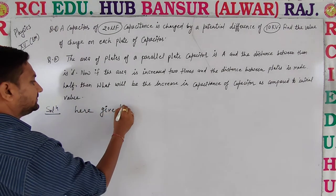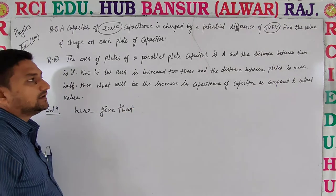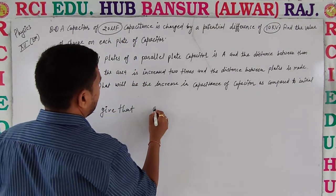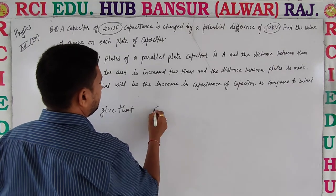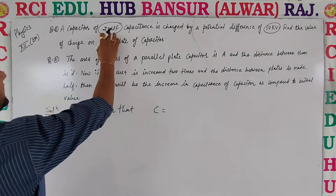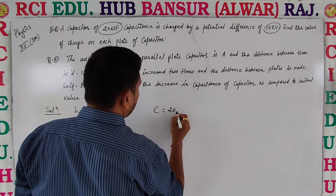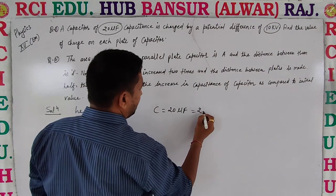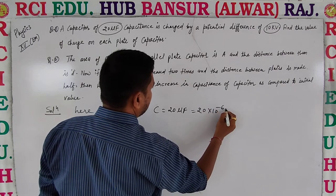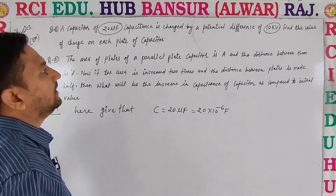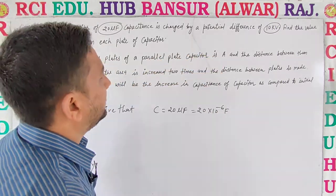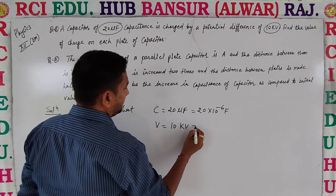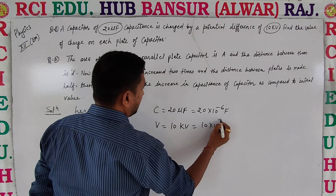Given that capacitance C is equal to 20 microfarad, so 20 multiply 10 to the power negative 6 farad. And potential difference V is equal to 10 kV, means 10 multiply 10 to the power 3 volts.